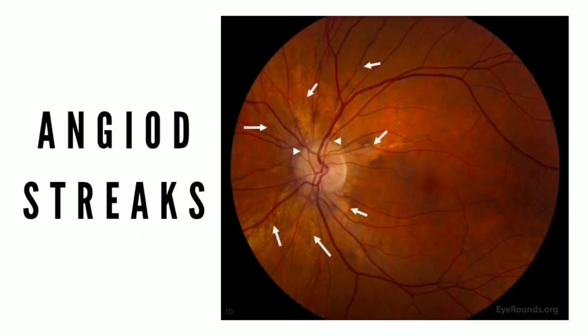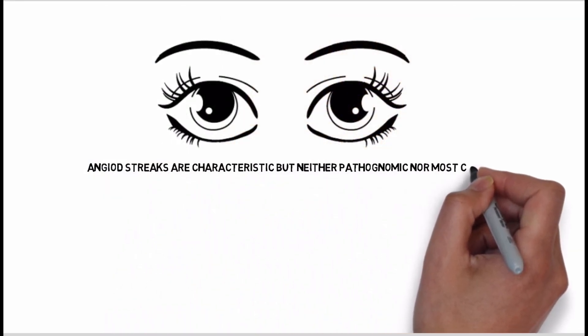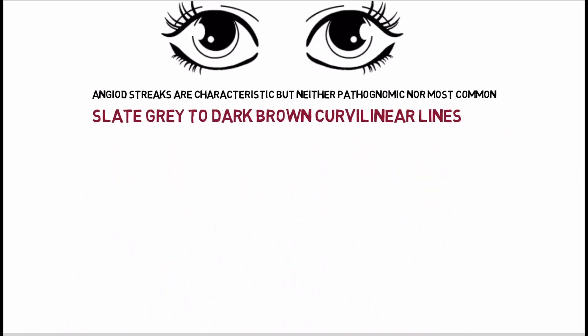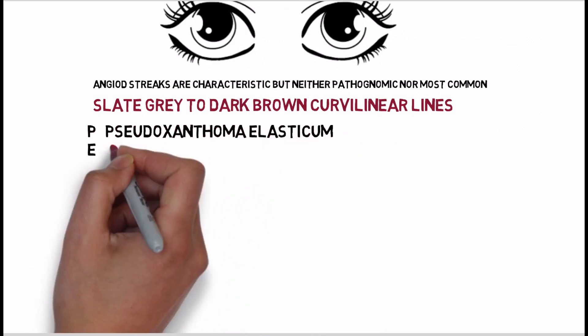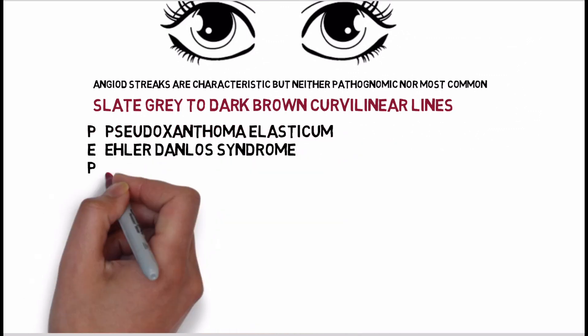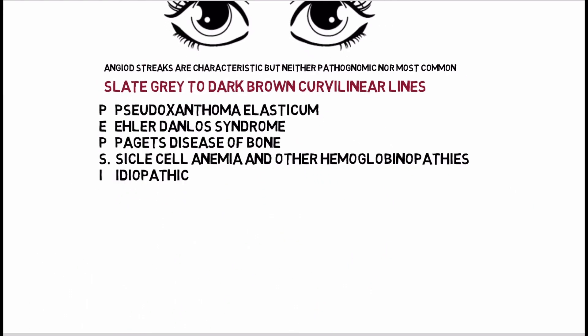Angioid streaks appear as slate-gray to reddish-brown curvilinear bands that radiate from the optic disc. It is important to note that this finding is characteristic but neither common nor pathognomonic — there are other causes of angioid streaks, which can be remembered by the mnemonic PEPSI: P — pseudoxanthoma elasticum, E — Ehlers-Danlos syndrome, P — Paget's disease of the bone, S — sickle cell anemia, I — idiopathic.